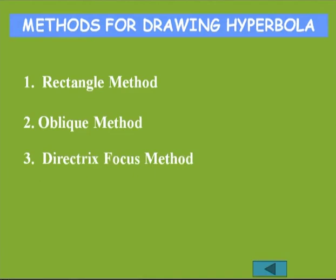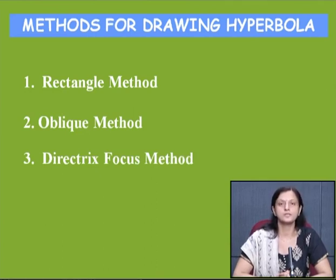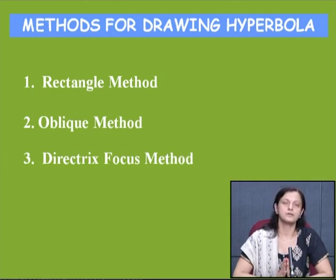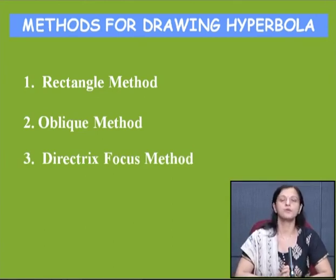Different methods of drawing the hyperbola: we are going to learn three methods for the construction of hyperbola — the rectangle method, the oblique method, and the directrix-focus method. I will explain all three methods with examples one by one. We get the hyperbolic section when we cut the cone with a cutting plane parallel to the axis, and eccentricity in the case of hyperbola is always greater than one.